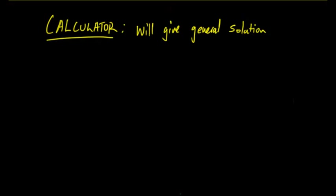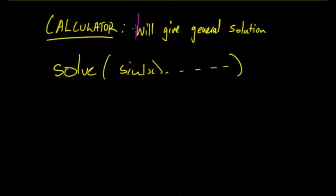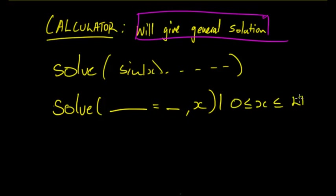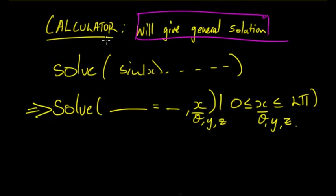On your calculator, when you input 'solve sin(x) = ...' it will give a general solution. That can be useful, but if you need to restrict the domain you must input the restriction as well — something like the equation, comma x, then a vertical bar with the domain restriction. It's really important that you learn how to do this on your specific calculator, especially for large domains where subbing in values one by one wastes unnecessary time, particularly on multiple choice questions.